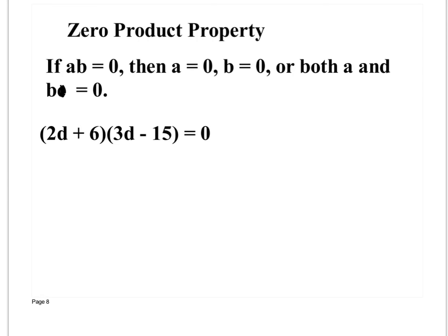Zero product property. What you need to know, if a times b equals 0, then a equals 0, or b equals 0, or both a and b equals 0. So when you have something like this, 2d plus 6 times 3d minus 15 equals 0, you need to figure out which one makes this a true statement. And it can either be this one being 0, or this equals 0, or both equaling 0. So what I do is I take 2d plus 6 equals 0 and figure out what that is. And I take 3d minus 15 and make that equal to 0.